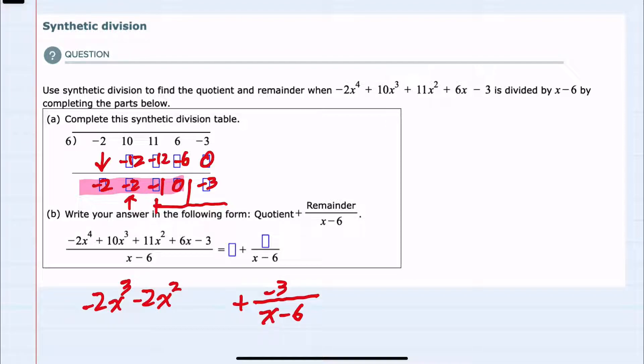Then we have a minus 1, so minus 1x. The last one which would be the constant is a 0, so we won't have a number here to add. We have our quotient and our remainder.